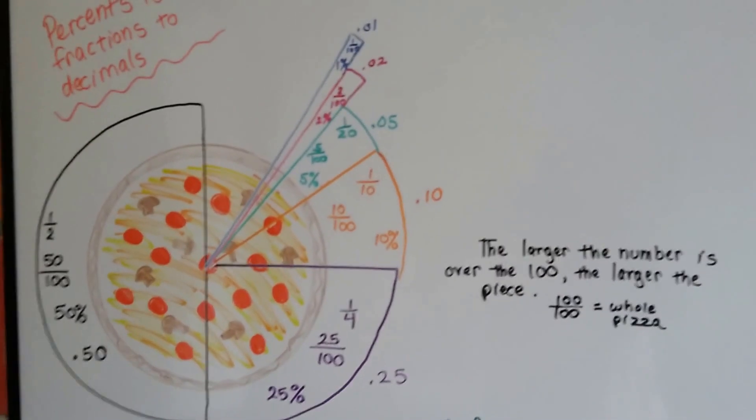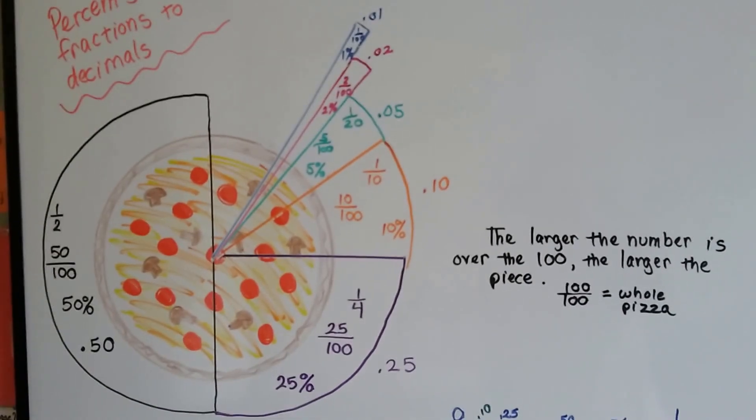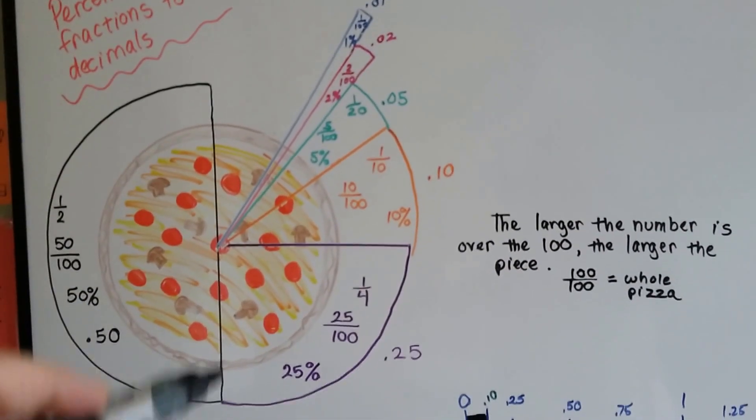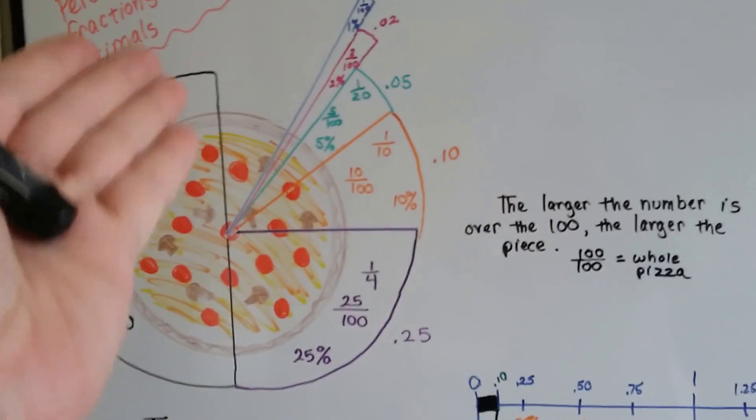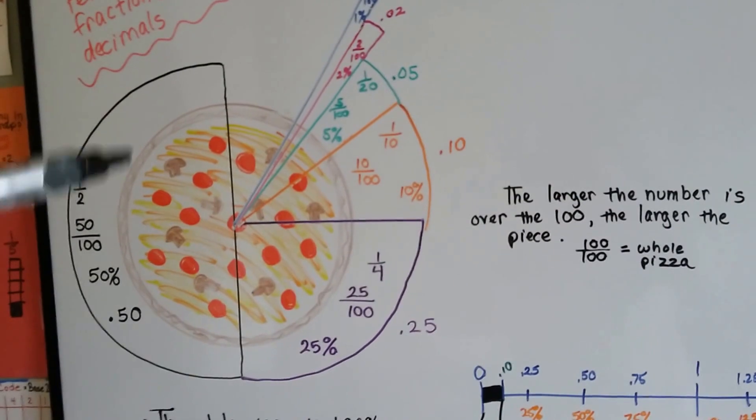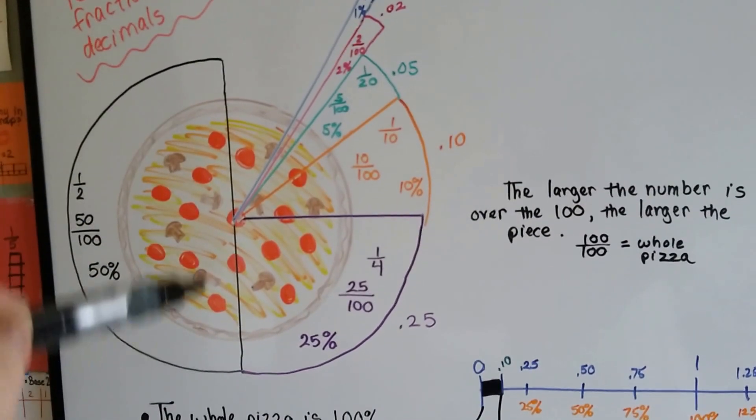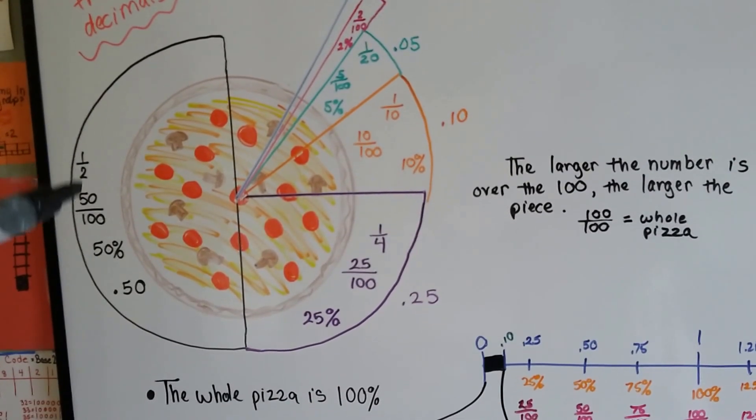I'm going to show you this. We've got a pizza, and I've split it into fractions, decimals, and percents. You can see that by cutting it right down the middle here, this is half the pizza right here. It's 50 over 100. It's 50 percent. It's 0.50. Decimal, percentage, fraction. Simplified fraction.